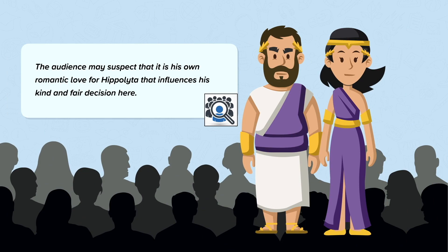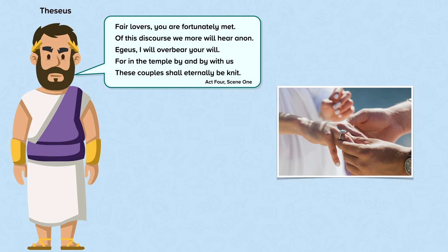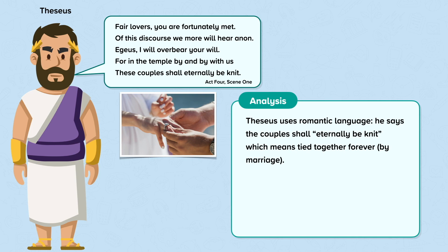Theseus announces that he will allow the two couples to marry, saying: "Fair lovers, you are fortunately met. Of this discourse we more will hear anon. Aegeus, I will overbear your will, for in the temple, by and by, with us, these couples shall eternally be knit." Theseus uses romantic language — he says the couples shall be "eternally be knit," which means tied together forever by marriage. This image echoes Lysander's earlier sentiment that his heart was knit to Hermia's.